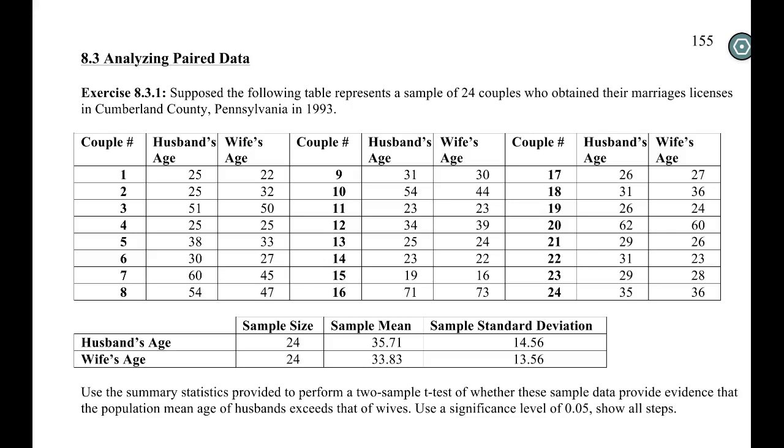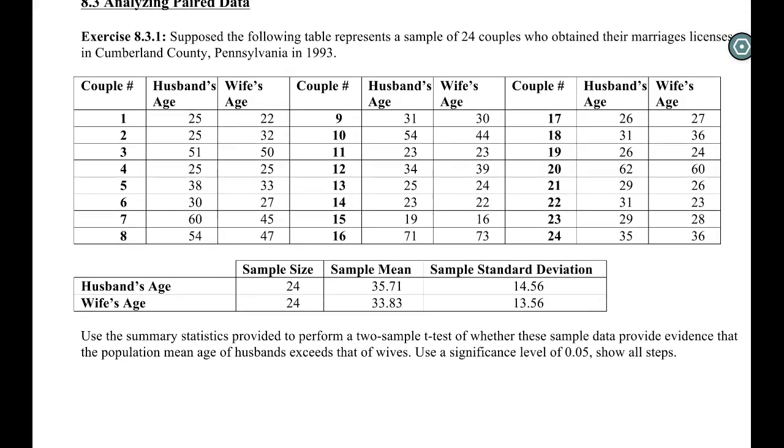So this first example, I actually have us work through the wrong way first. We're looking at couples and the ages of both the husband and the wife when they were married. They have here some summary stats. You can see the average age of the husbands was 35.7, while the average age of the wives was 33.8. So if we really wanted to, we could set up a hypothesis test to do this.